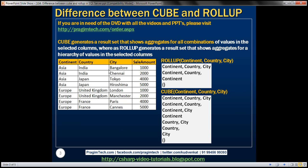We'll use this sales table. Notice we have a sale amount column. In addition, these three columns: city, country, and continent. There is a hierarchy relationship between these three columns. City is present within a country, and country is present within a continent.